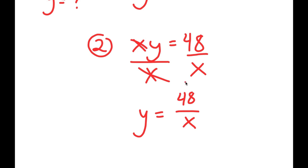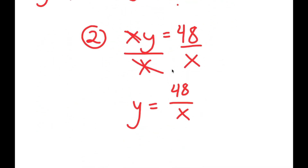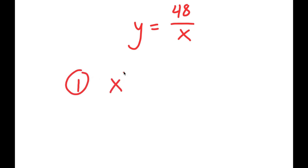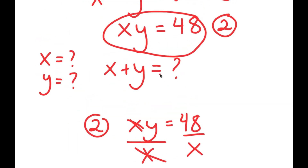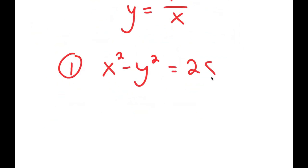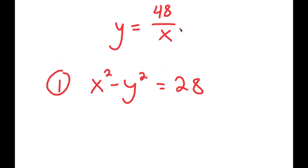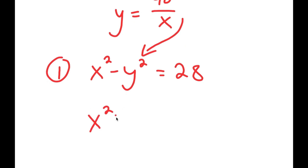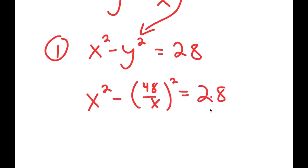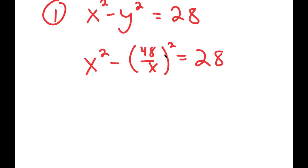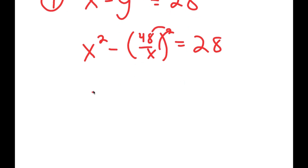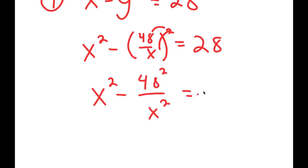Using this equation, I can plug this back into equation 1. Equation 1 is x squared minus y squared equals 28. Since y equals 48 over x, substituting gives x squared minus 48 over x, all squared, equals 28. Squaring the fraction gives x squared minus 48 squared over x squared is equal to 28.